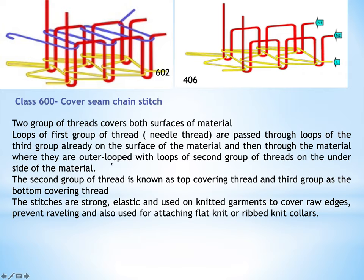The needle threads then pass through the material, where they interloop with the loops of the second group of thread on the underside of the material. The second group of thread — the yellow looper thread — secures the needle threads on the underside. So the needle threads are secured on the face side by the top covering thread (purple) and on the underside by the looper thread (yellow).